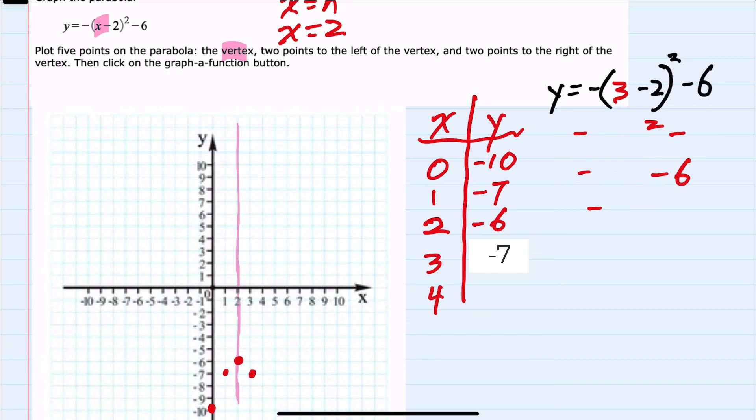And we'll plug in four. This would give us a negative four minus two is two. Bring down the minus six. This is a negative two squared is four. And again we have a negative ten. So we do have symmetry here.